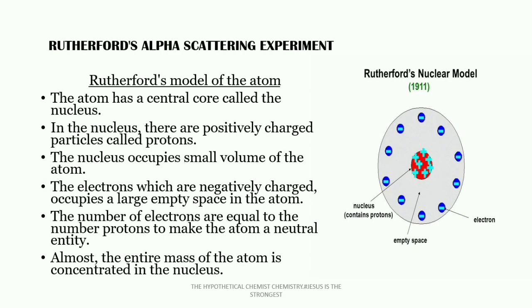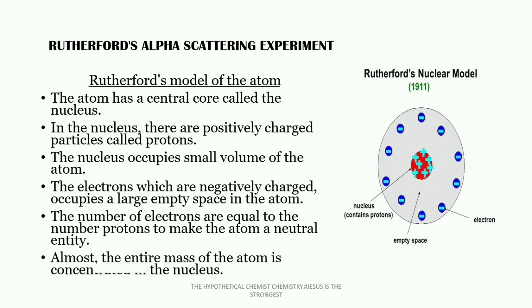That is the conclusion of Rutherford's alpha scattering experiment. Now, Rutherford's model of the atom: he stated that the atom has a central core called the nucleus. Rutherford is the one who discovered the nucleus, within which we can find the proton — the main subatomic particle he discovered through the alpha scattering experiment. He said that in the nucleus there are positively charged particles called protons, and the nucleus occupies a small volume of the atom.